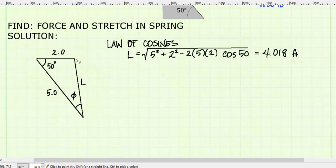I used the law of cosines to solve for my length L, since I had the other two sides and the angle 50 degrees opposite L. I get 4.018 feet.